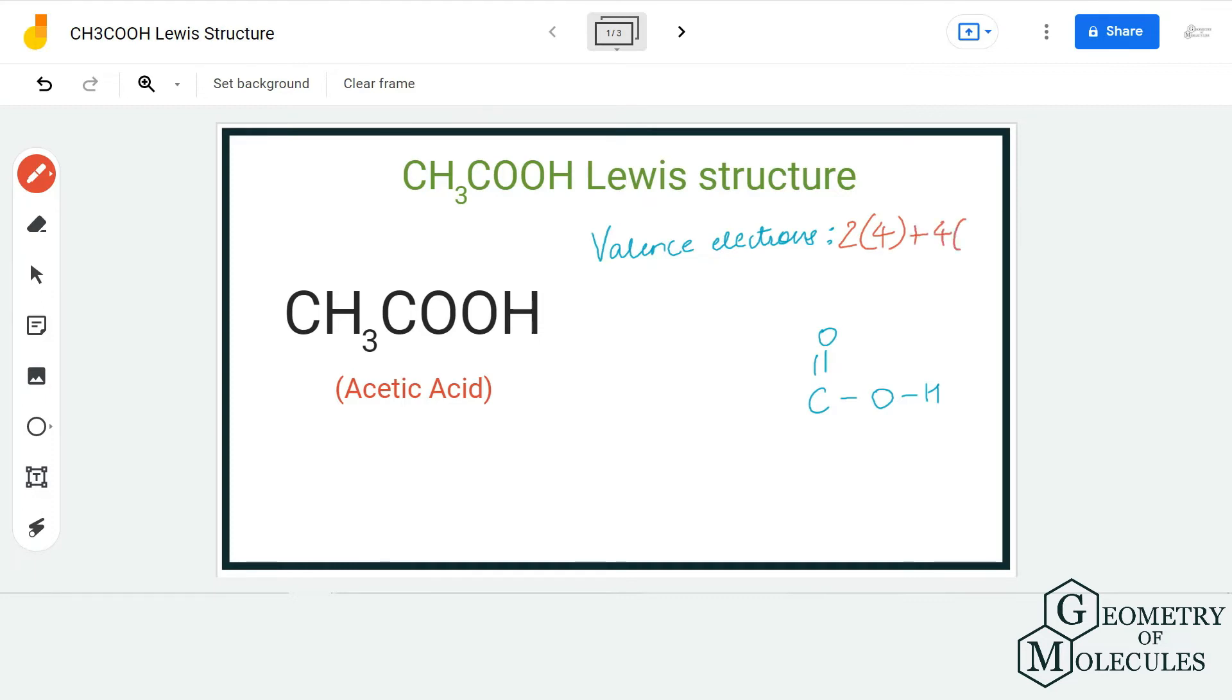And oxygen atoms have six valence electrons in its outer shell, so you can do the math and you will come to know that there are 24 valence electrons for this molecule.